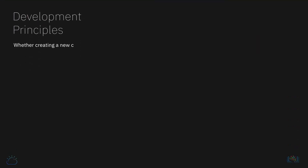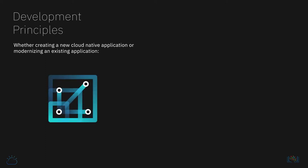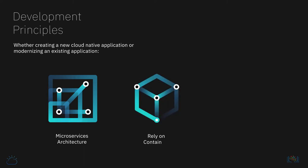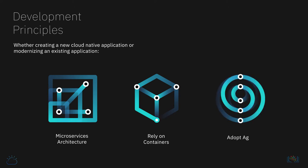Whether creating a new cloud-native application or modernizing an existing application, developers adhere to a consistent set of development principles: follow the microservices architecture approach by breaking applications down to single-function microservices; rely on containers for maximum flexibility, scalability, and portability; and adopt agile methods that speed the creation and improvement process through quick iterative updates based on user feedback.